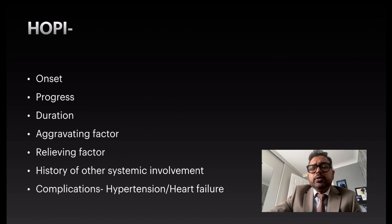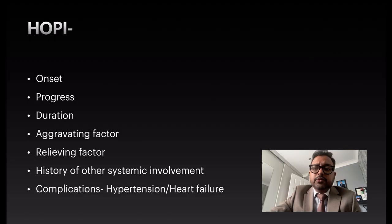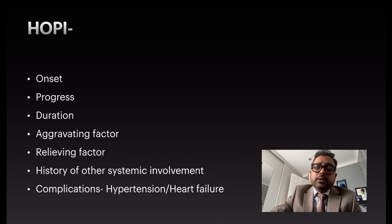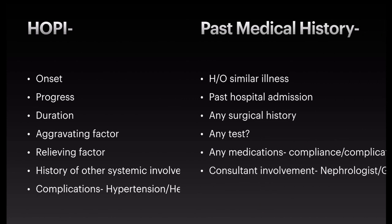You need to take a history of present illness, starting with onset, progress, duration, aggravating and relieving factors, and history of other systemic involvement — such as any cardiac involvement or encephalopathy — and complications like hypertension and heart failure.